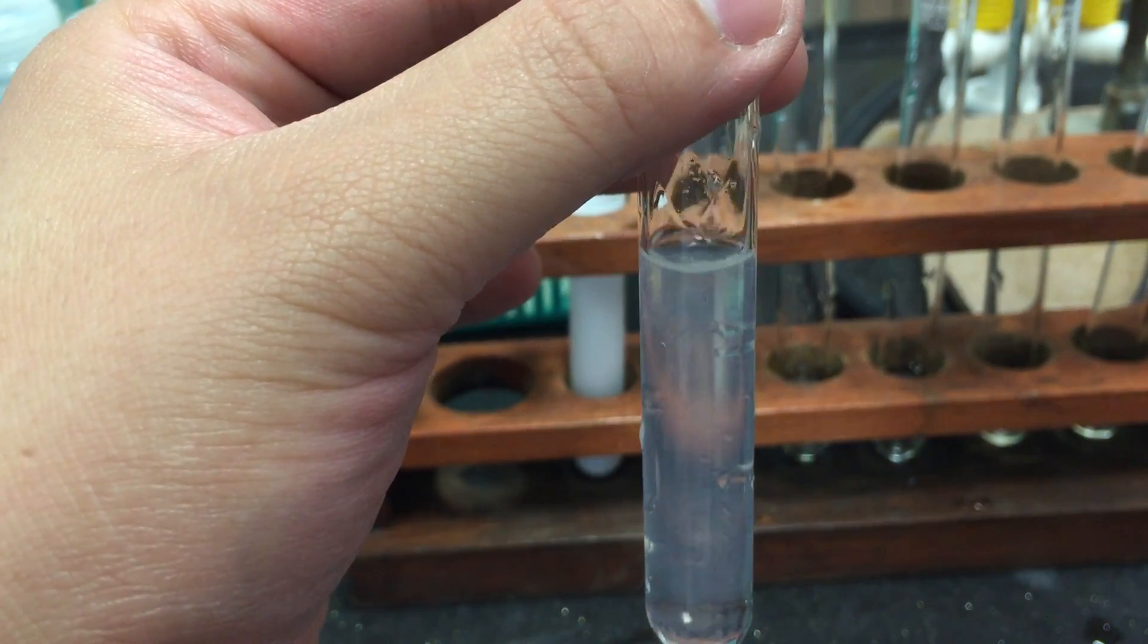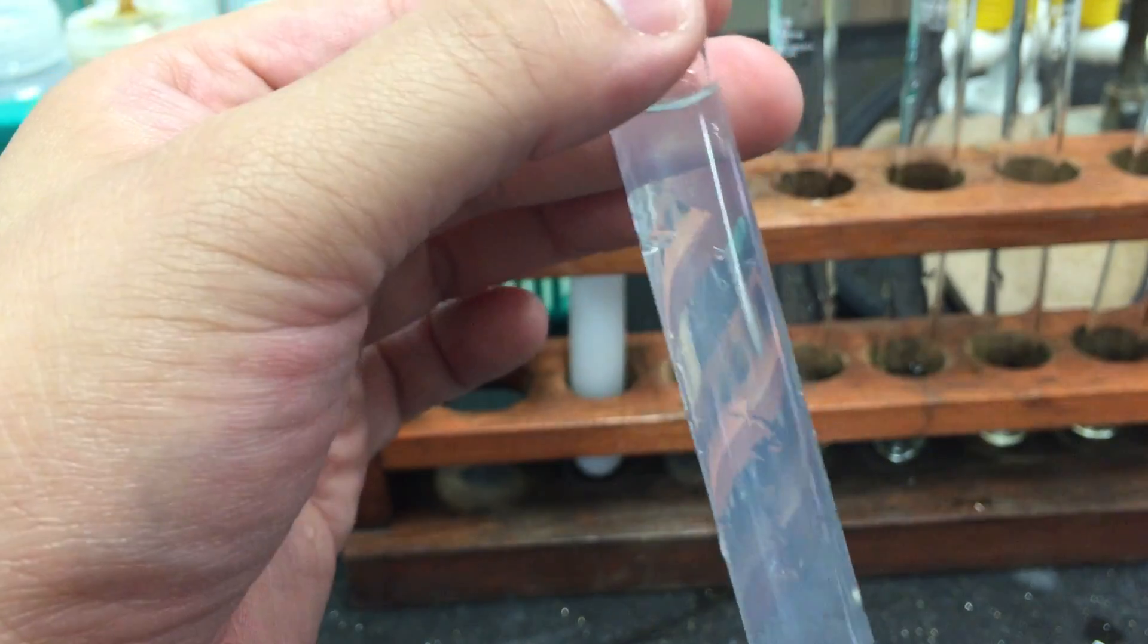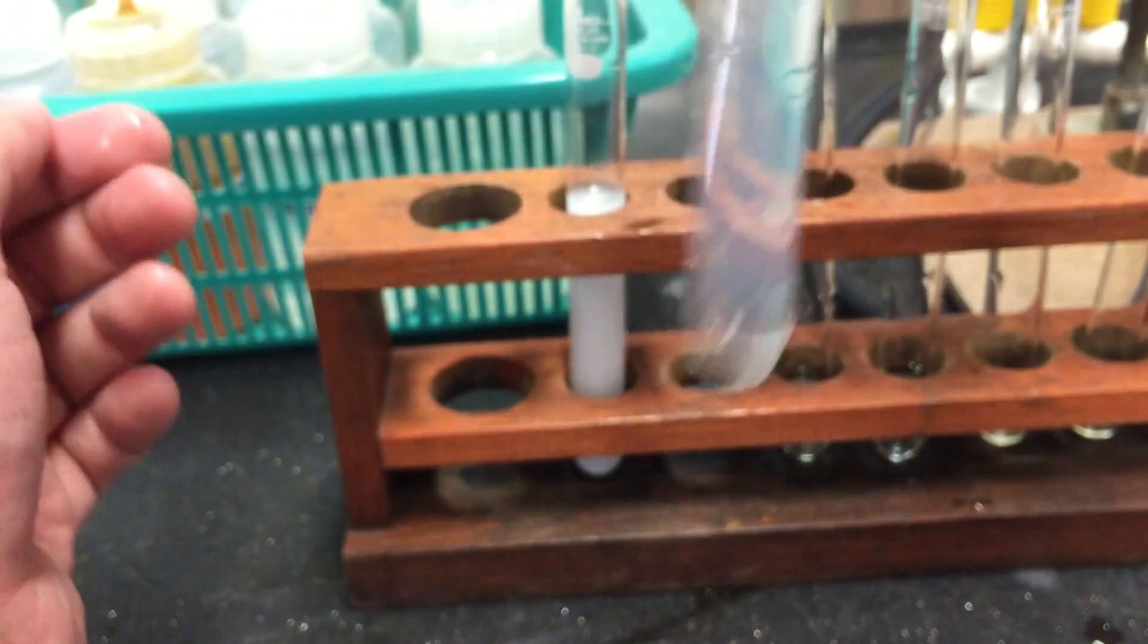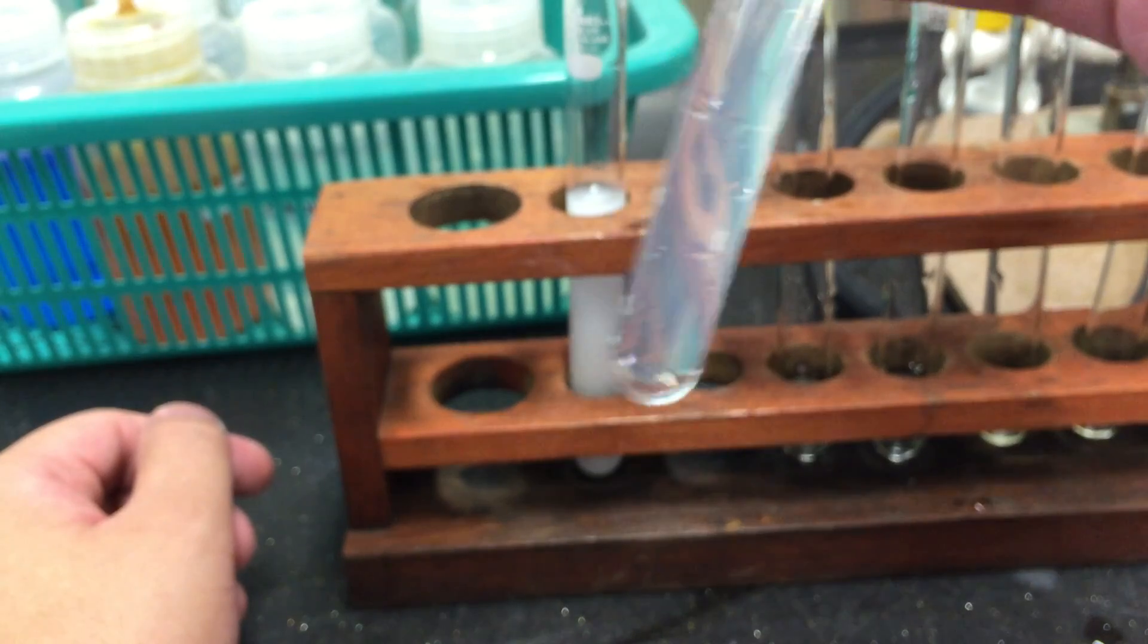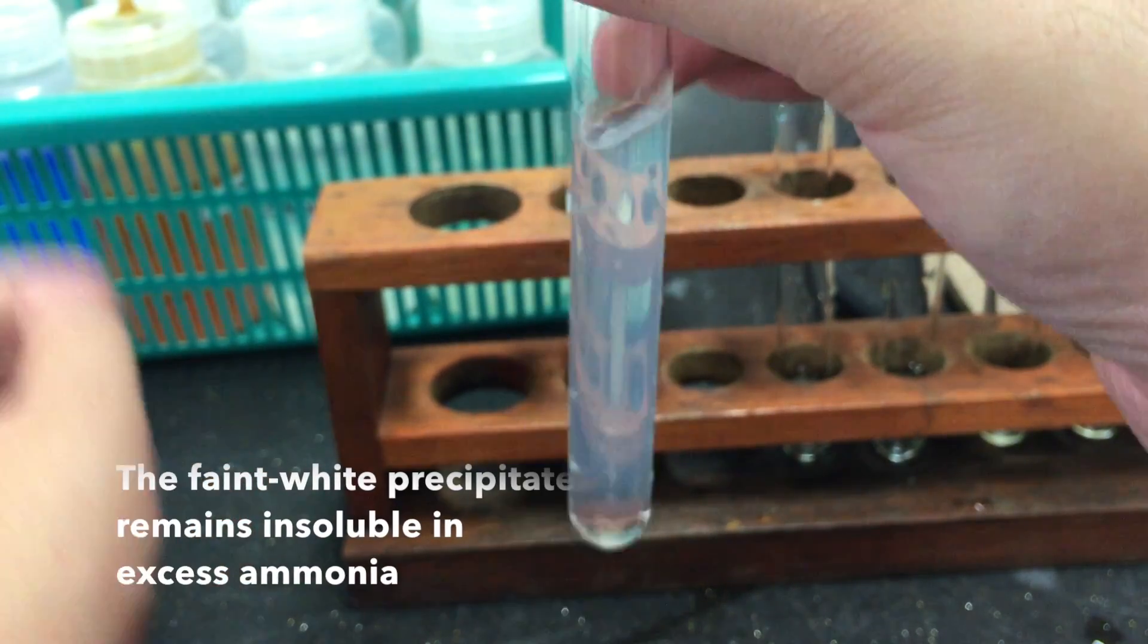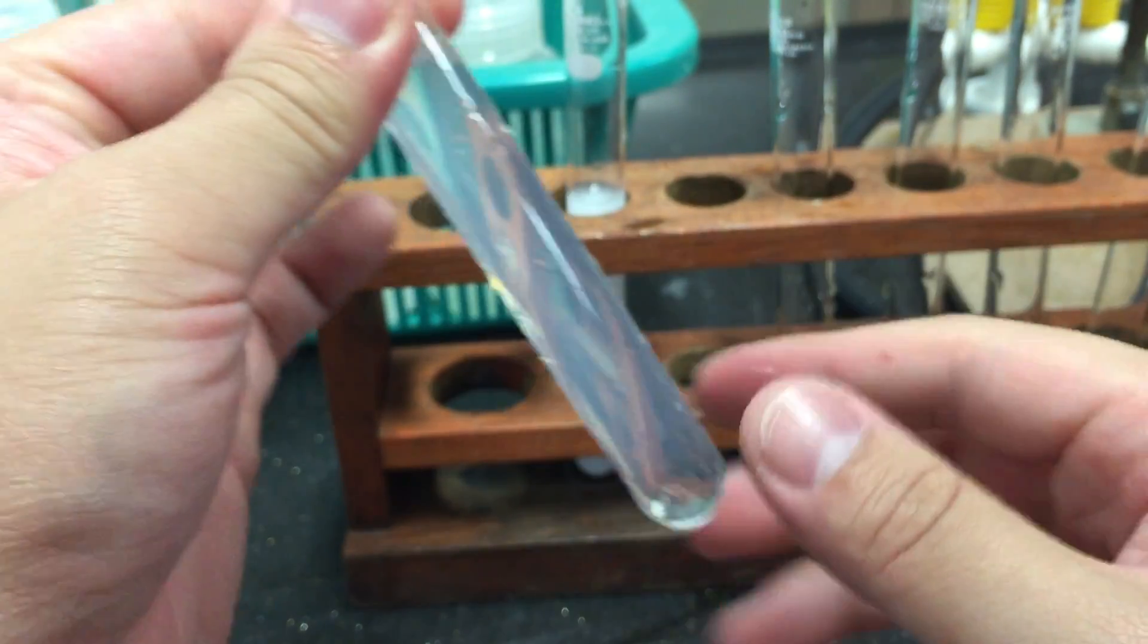We may proceed to add an excess of ammonia solution. Very clearly, the faint white precipitate remains insoluble in excess ammonia.